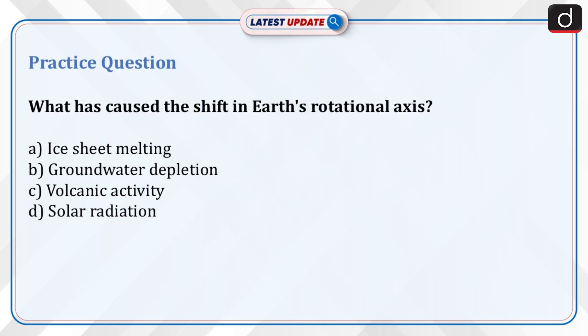Now it is time for a practice question: what has caused the shift in Earth's rotational axis? Options: ice sheet melting, groundwater depletion, volcanic activity, or solar radiation? Send the answer of this question in the comment section.